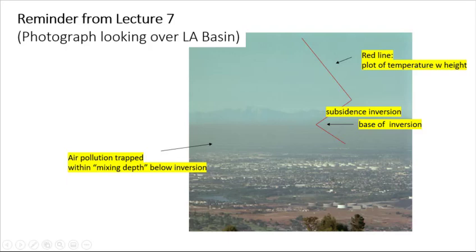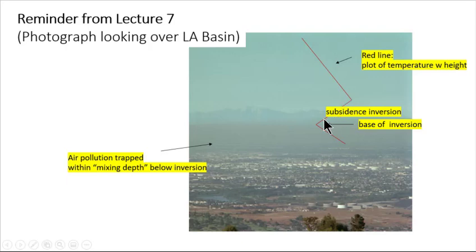To make the concept of the mixed layer more clear, we recall here a graphic from Lecture 7 showing air pollution trapped within the mixed layer looking over Los Angeles. The air pollution is largely confined to the mixed layer as can be seen from this graphic. The red line indicates the typical daily temperature profile for midday, most notably showing the subsidence inversion capping the mixed layer where temperature increases with height. As discussed in Lecture 7, temperature inversions tend to inhibit vertical mixing of air and hence act to trap pollution emitted at the surface within the mixed layer beneath the subsidence inversion.